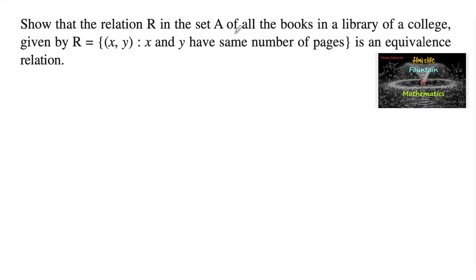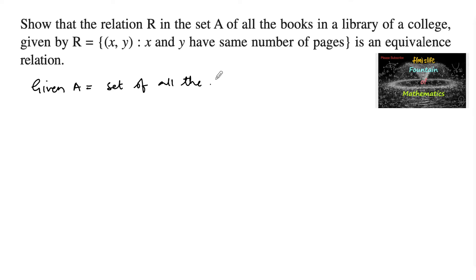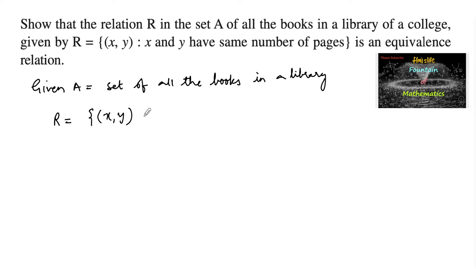Show that the relation R in the set A of all the books in a library of a college, given by R = {(x, y) : x and y have the same number of pages}, is an equivalence relation. So, given set A is the set of all books in a library of a college, and the relation R = {(x, y) : x and y have the same number of pages}.